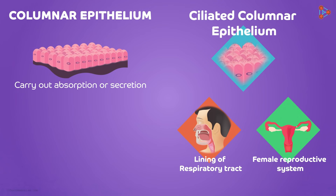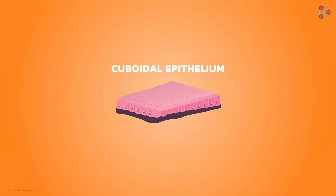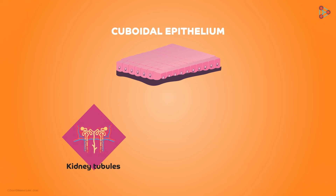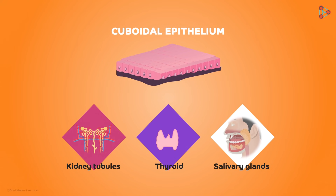At times, some substances aggressively pass through small channels lined by epithelial cells, so along with absorption and secretion, we need support too. Here, the cuboidal epithelial cells come to our rescue. These cuboidal cells are found lining the kidney tubules, in the thyroid, and also in the ducts of the salivary glands.